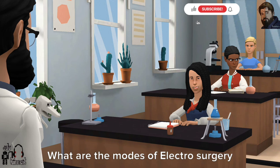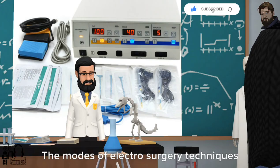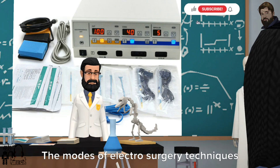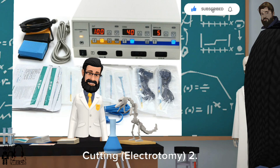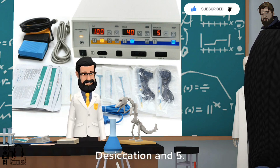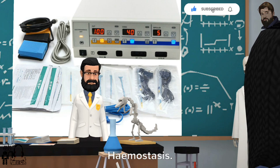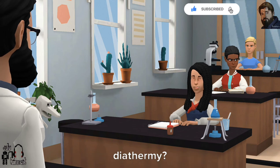What are the modes of electrosurgery techniques? The modes of electrosurgery techniques are: 1. Cutting (electrotomy), 2. Coagulation, 3. Fulguration, 4. Desiccation, and 5. Hemostasis.